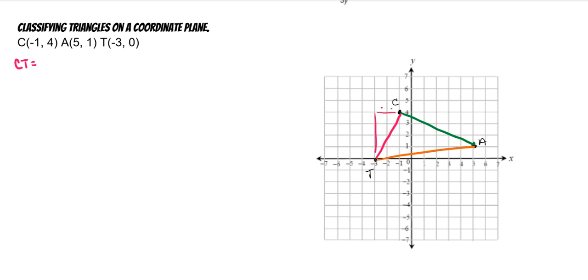So we have 2 squared plus 1, 2, 3, 4 squared is equal to CT squared. 2 squared is 4. 4 squared is 16. 16 plus 4 is 20. And to undo it, you take the square root. So CT is equal to the square root of 20.